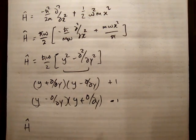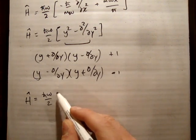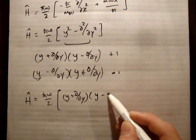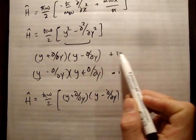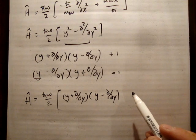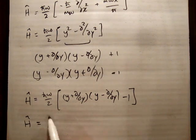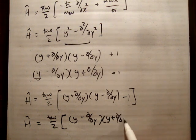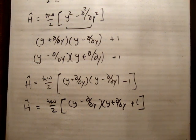So we can rewrite the Hamiltonian in one of two ways. We can say it is h-bar omega over 2 times (y + d/dy)(y - d/dy), and because multiplying this together gives an extra factor of 1, we need to subtract 1. Separately, you could also write it with the operators swapped: (y - d/dy)(y + d/dy), and in this case you have to add 1. So there are two ways of writing the Hamiltonian operator.